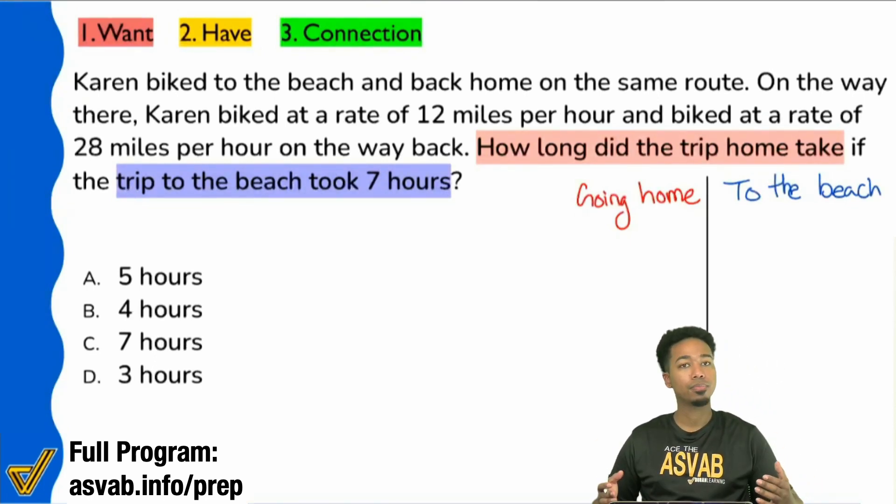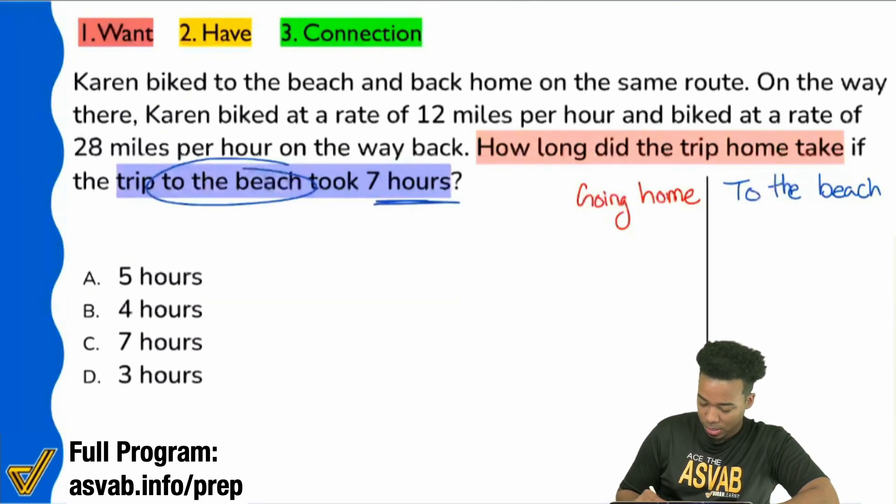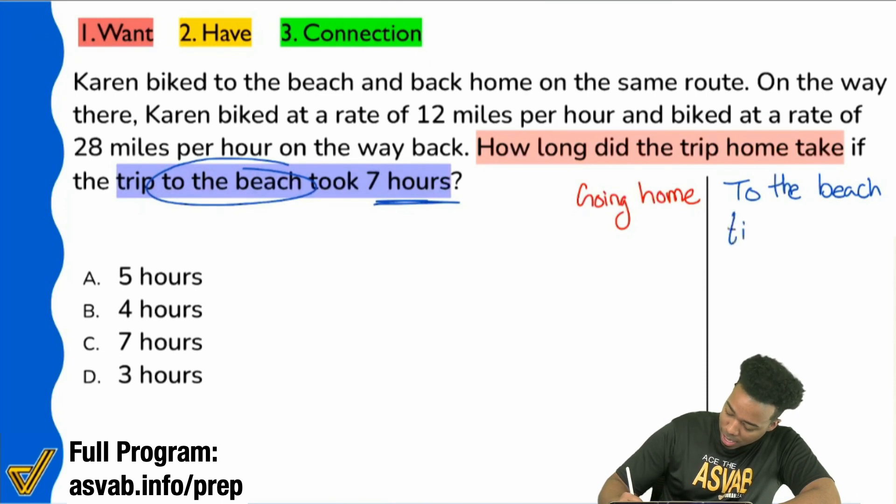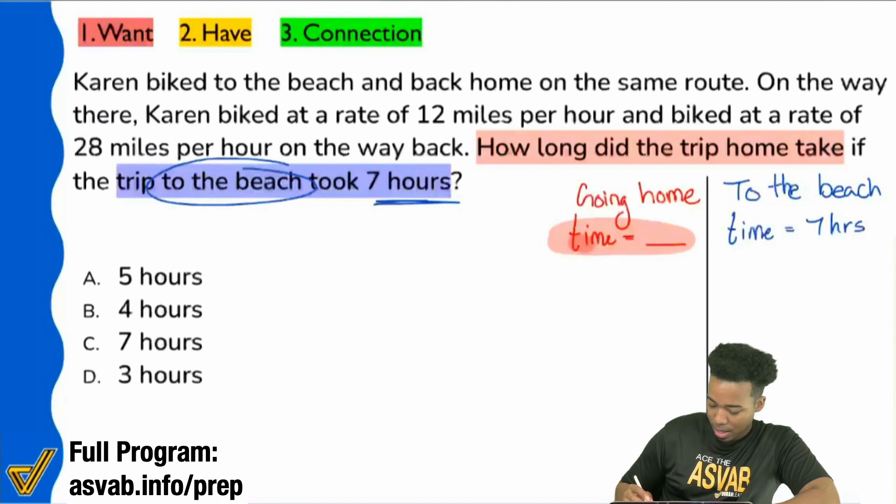Let's see what information we should write down first in that same question sentence. Like I said, the trip to the beach took seven hours. So I'm going to say time equals seven hours. What I'm looking for on the trip going home is the time. I'm looking for this. So I'm going to highlight this. I am going to highlight this. I'm looking for that.